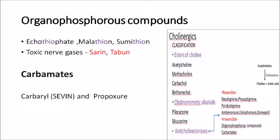In the classification of cholinergics, reversible anticholinesterases include the stigmins, onium drugs, and donepezil. Irreversible ones include organophosphorus compounds and carbamates. Organophosphorus compounds include pesticides like echothiophate, malathione, and sumethion, and toxic nerve gases like sarin and tabun. Carbamate examples are carbaryl and propoxur.